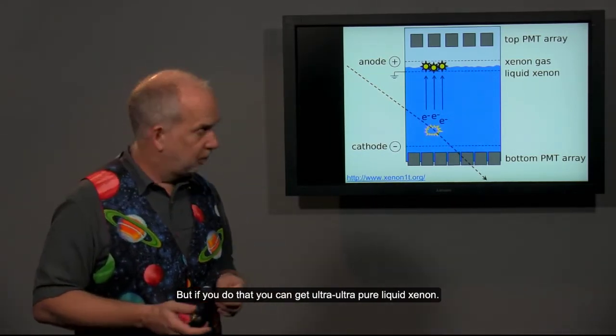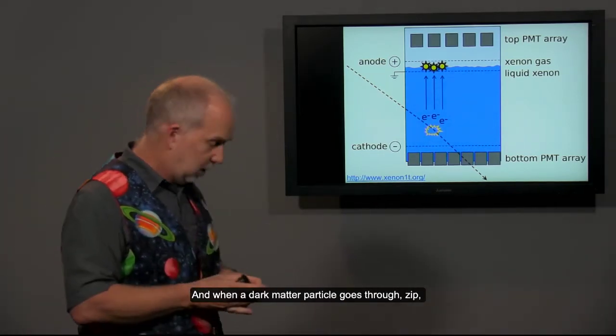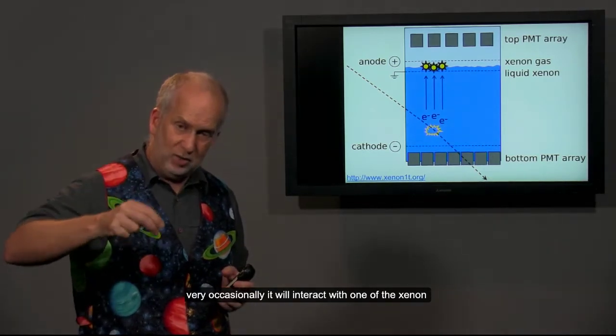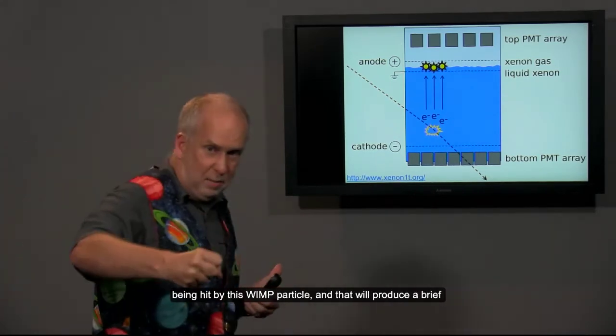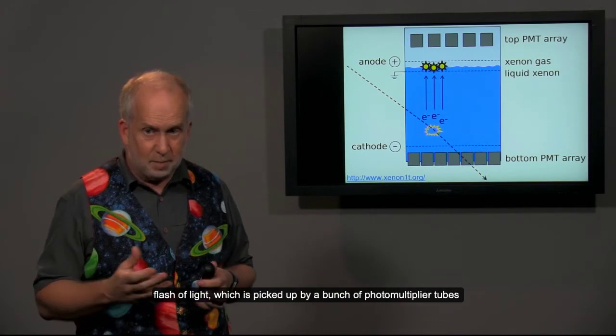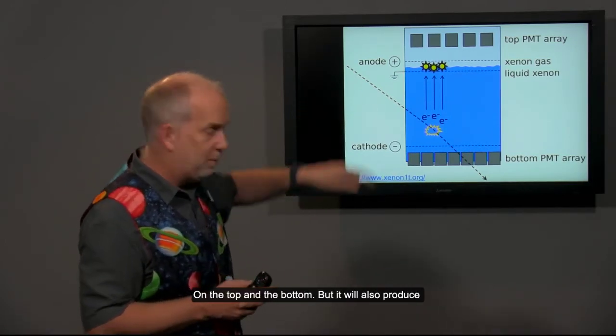But if you do that, you can get ultra, ultra-pure liquid xenon. And when a dark matter particle goes through, very occasionally it will interact with one of the xenon atoms. The xenon atom will recoil from being hit by this WIMP particle. And that will produce a brief flash of light, which is picked up by a bunch of photomultiplier tubes on the top and the bottom.